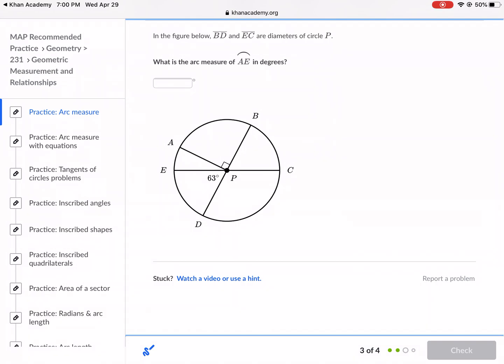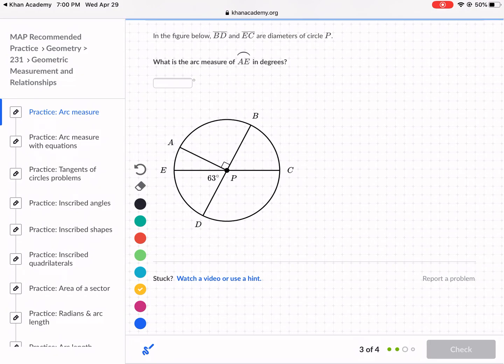What is the arc measure of AE in degrees? So first, let's identify AE. AE is this small guy right here. Now, it gives us several clues. One of the clues is it says BD is diameter. That means this is half the circle. Okay, so that total sum on that side, let me do it in green. This needs to add up to 180 and no more than 180. It has to be 180, okay? So we know something else. We know this is 90 degrees because it's giving us the right angle, so that's 90. And then it tells us that this is 63.